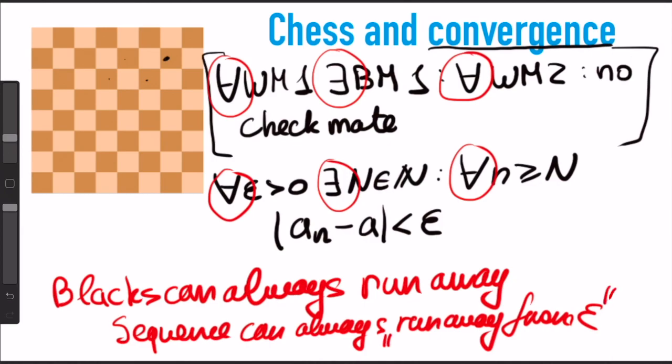This should be treated in inverted commas because it's not literal. But I really like this analogy, and I think it should serve as a good intuition behind why convergence is defined the way it is.